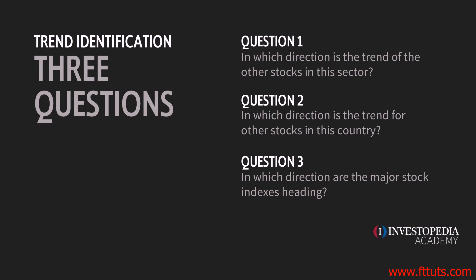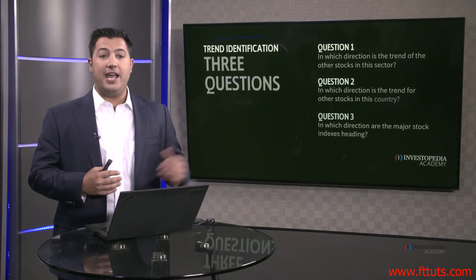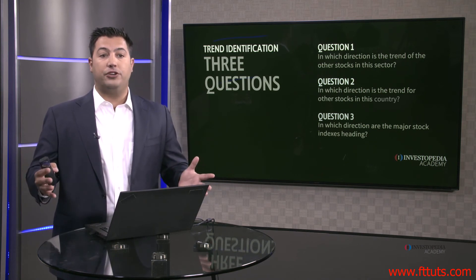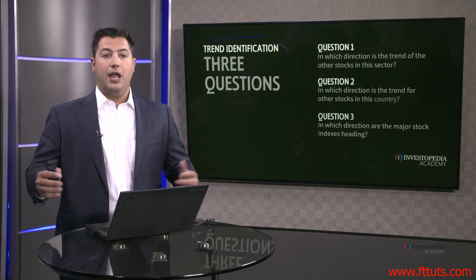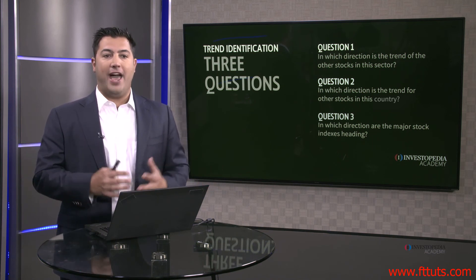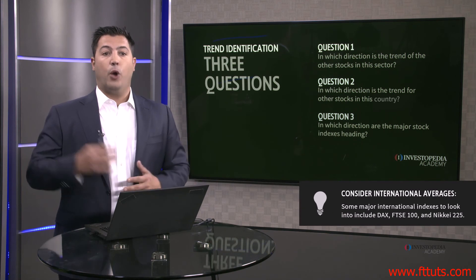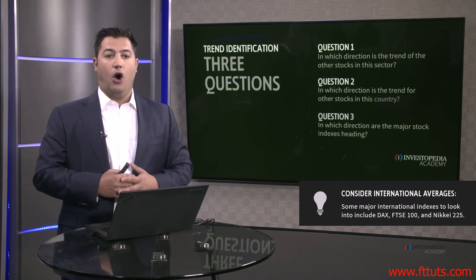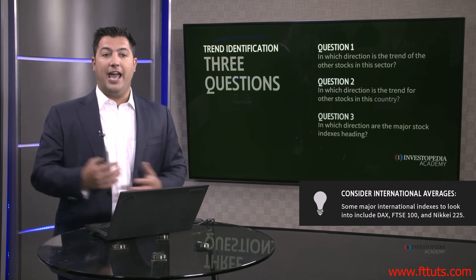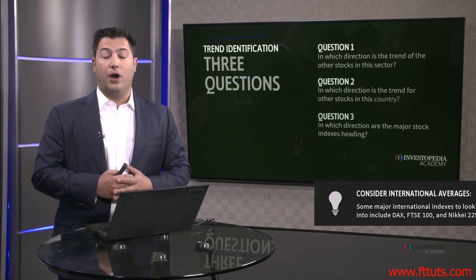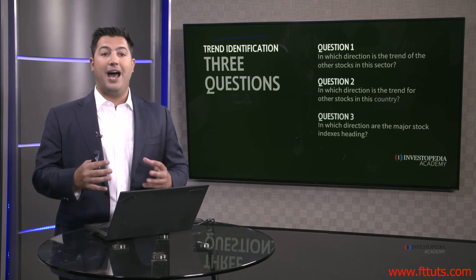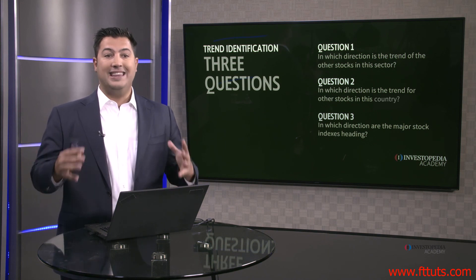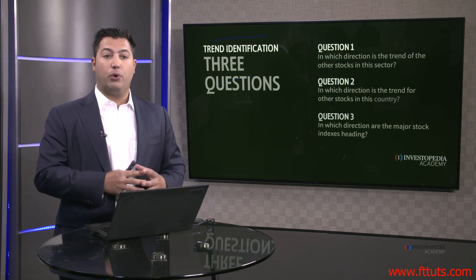Finally, we want to take it one step above that and see what the major indexes of that country are doing. If we're looking at stocks in the United States — let's say Bank of America — we want to know what the rest of the banks are doing, what the other sectors are doing, and what the major indexes for that country are doing. We want to see what the S&P 500 and the Dow Jones Industrial Average are doing. Are they making higher lows and higher highs above an uptrend line, or lower lows and lower highs below a downtrend line? We want to be buying stocks in sectors that are going higher, within indexes that are also going higher. That is the weight of the evidence approach to trend identification.